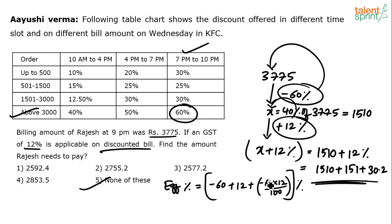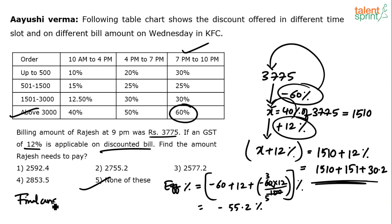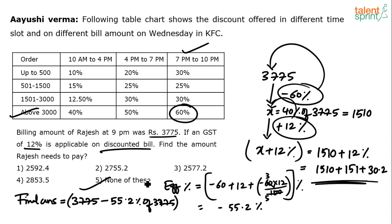Effective percentage: −60 + 12 + (−60 × 12)/100 = −48 + (−720/100) = −48 − 7.2 = −55.2%. So you reduce 3775 by 55.2% to get the final answer. Since this is more than 50% reduction, the result is less than 1900 — none of the listed options are less than 1900, confirming option 5.